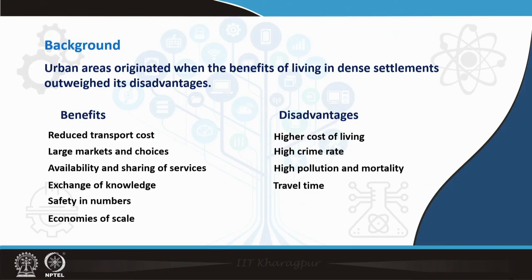Starting with urban areas in general, we can say that urban areas started to develop when a lot of people came together and settled in a particular area. This happened when they found that living together led to certain advantages. The primary advantage considered was related to transportation — reduction in transportation cost. People used to live in villages or rural areas, and travelling from one village to another to trade would take a lot of time. When they came together at one location, that reduced transportation cost to a large extent.